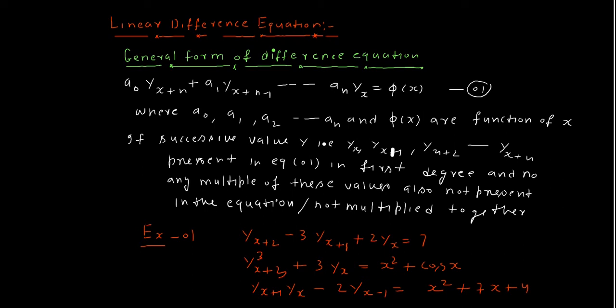There are three equations. Closely observing the first equation, all terms of the dependent variable — y(x), y(x+1), y(x+2) — are present in the first degree, meaning the power of each term is 1. And there is no multiple of these terms; y(x), y(x+1), and y(x+2) are not multiplied together. This satisfies both conditions, so this is a linear difference equation.